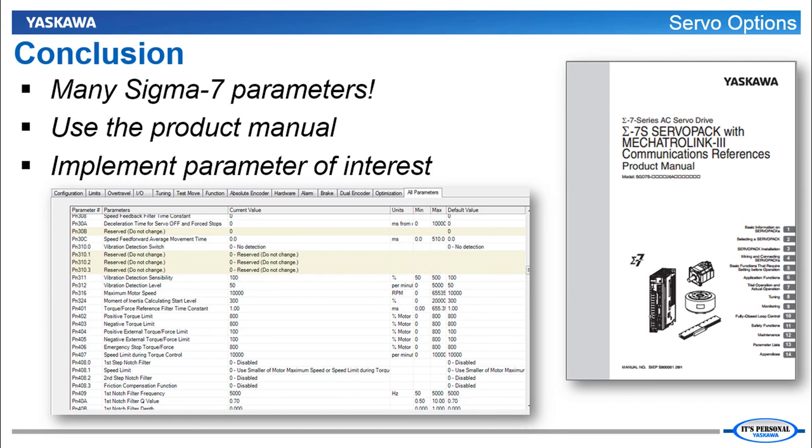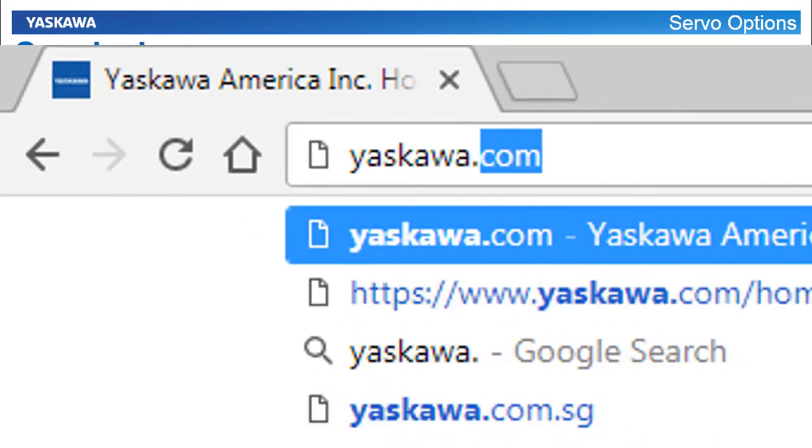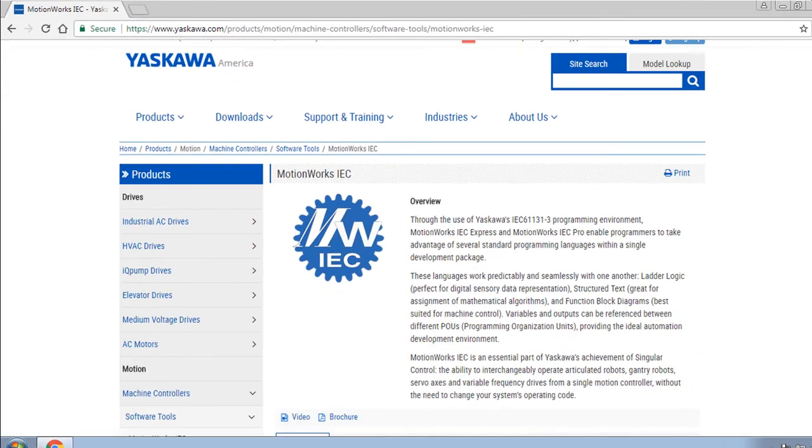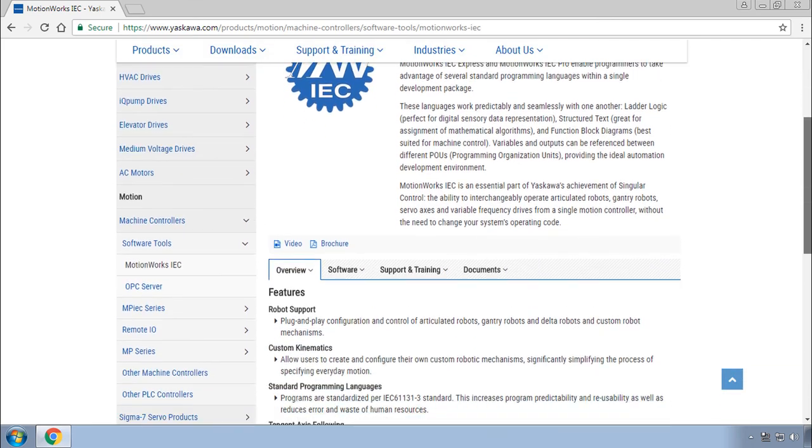Reboot if necessary. And see if you can verify the effect of the parameter. Otherwise for purposes of this training. Just know that the features exist. And be able to look up the details in the manual. Thank you for watching this video. And remember yaskawa.com slash IEC for more information on the MPIEC product line.